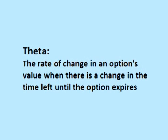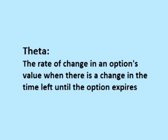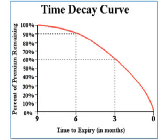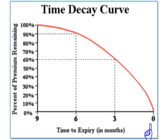Theta is the rate of change in an option's value when there is a change in the time left until the option expires. As the option moves closer and closer to expiring, there is less time left for the option to possibly move to where it is profitable. This causes the option to lose value due to time decay. The rate of time decay on an option's value is not linear — as an option gets closer to expiring, time decay speeds up. For instance, an option that expires in nine months will lose just 10% of its value from time decay the first three months. The second three months that triples, losing 30% of its original value. And the final three months, it loses 60%.